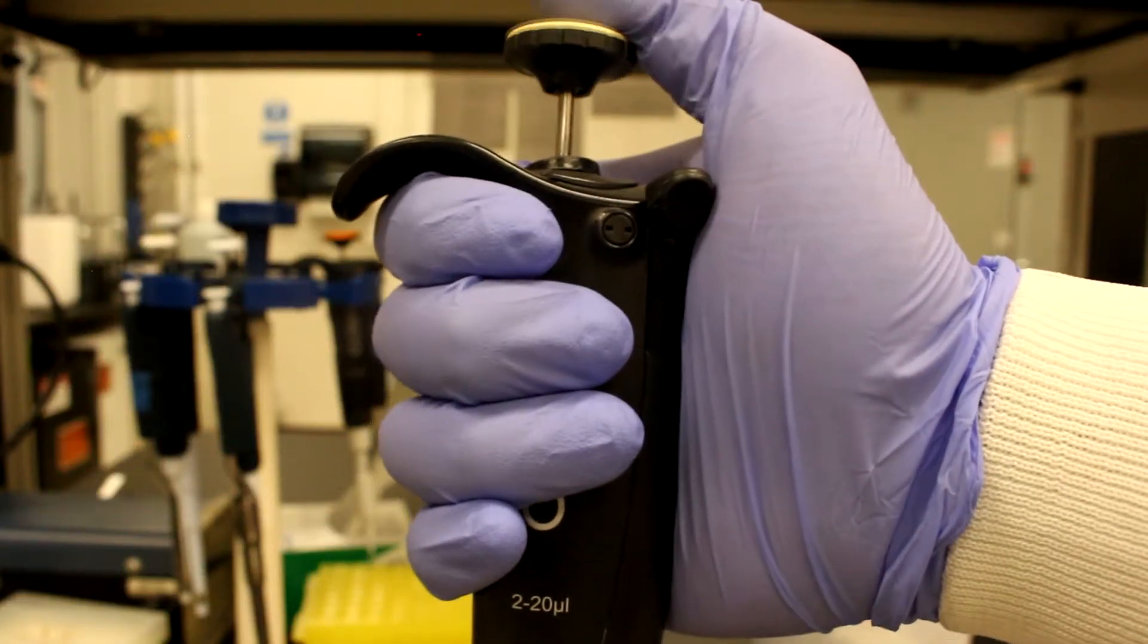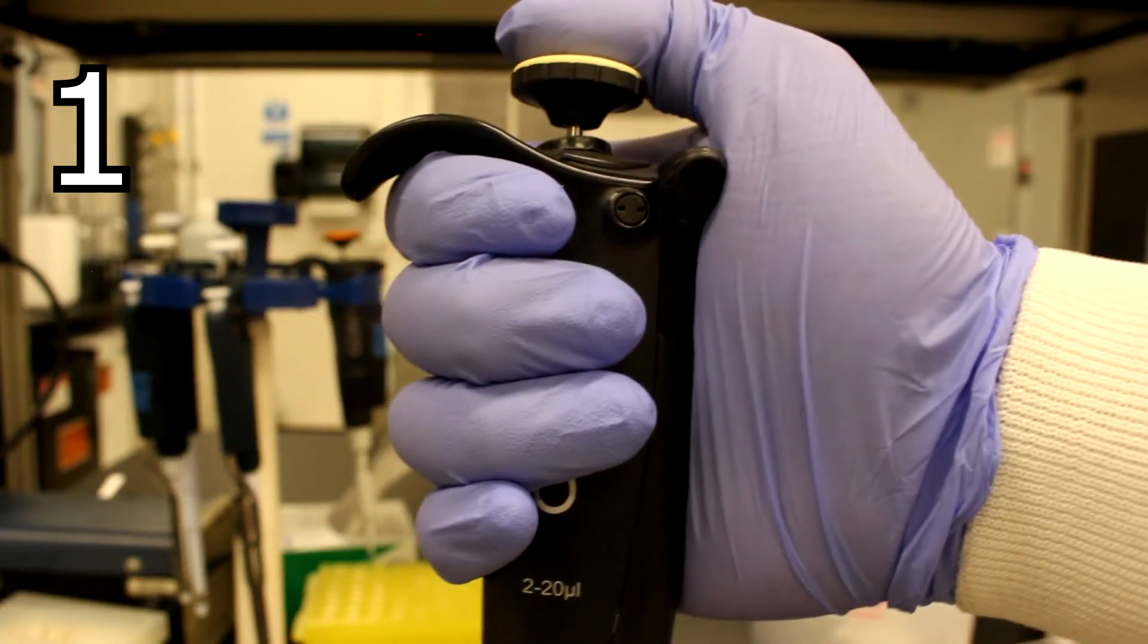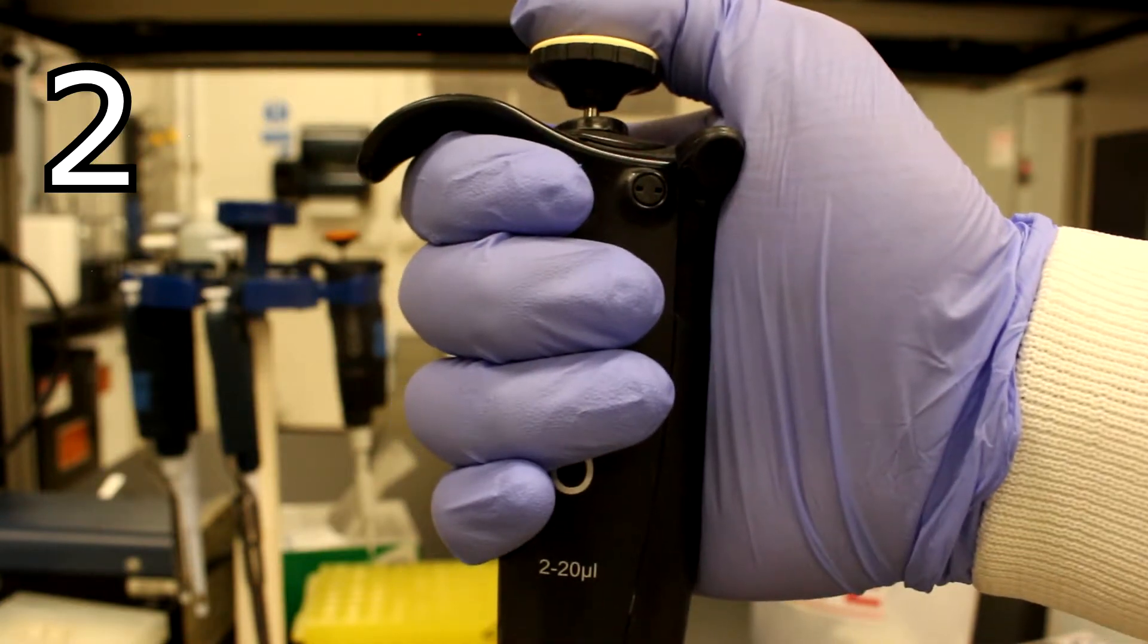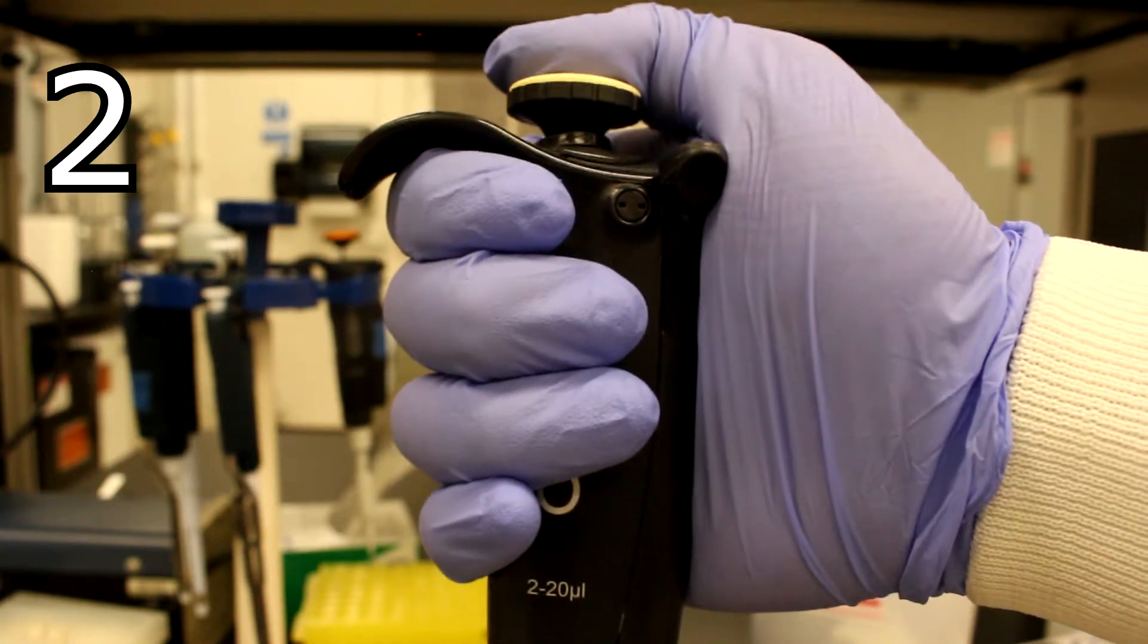A pipetter has two stops. The first stop indicates accurate measurement of the set volume, and the second is used to expunge the remaining fluid from the tip.